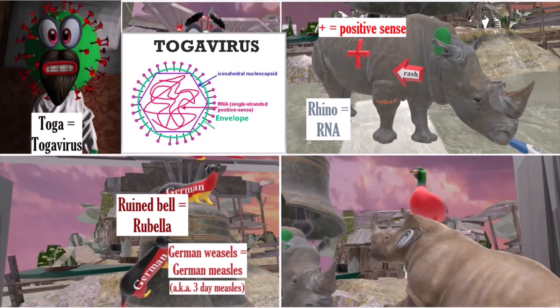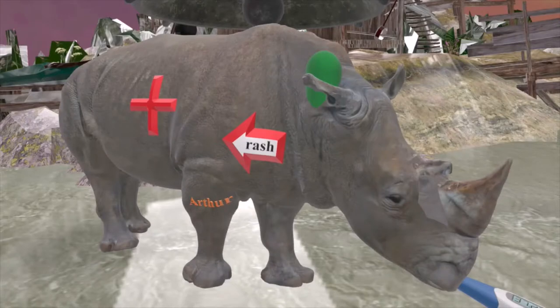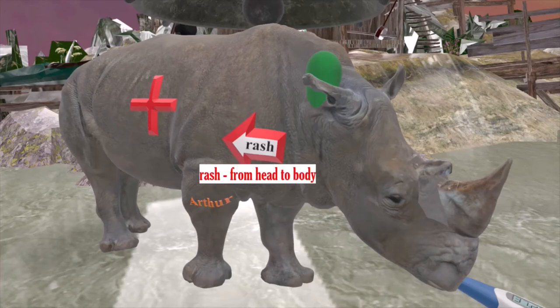Before we look at the details of these rhinos, we recall that the owner has an envelope. This reminds us of the structure of rubella — that it has an envelope, and specifically one that surrounds an icosahedral capsid. Let's take a look at this father rhino. The owner thought that this father rhino ruined the bell. This rhino has an arrow on him that says rash, headed towards his body, reminding us of the rash that presents in rubella — it spreads downward from the face toward the trunk and extremities.